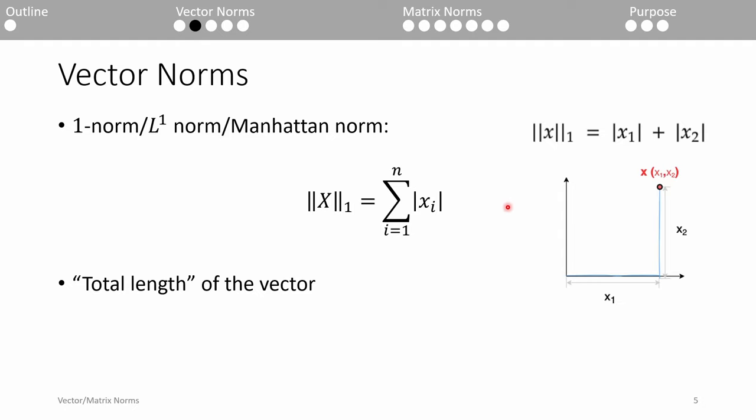Let's say we have a two-element vector x. The 1-norm of x is the sum of the absolute values of both elements. Basically, it represents the total length of the vector.